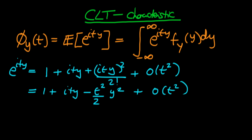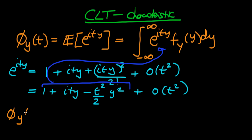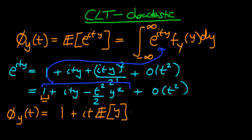Substituting this approximation into the integral reveals something interesting. The first term — the constant 1 — gives just the integral of the probability density function over all space, which by definition equals 1. The second term, treating i and t as constants, leaves the integral of y times the probability density, which is just the expected value of y.